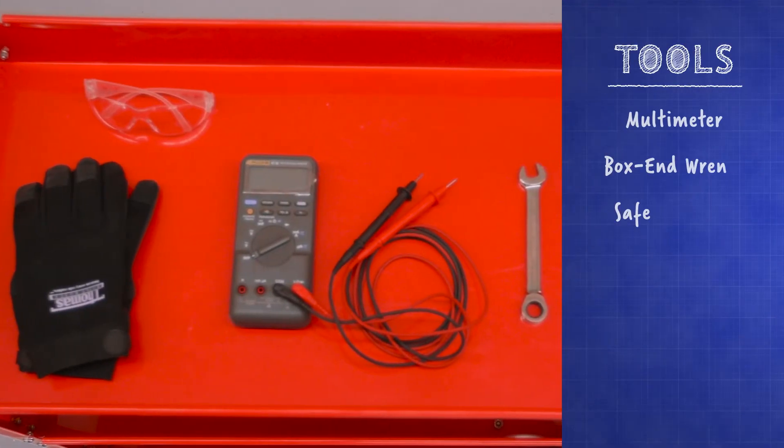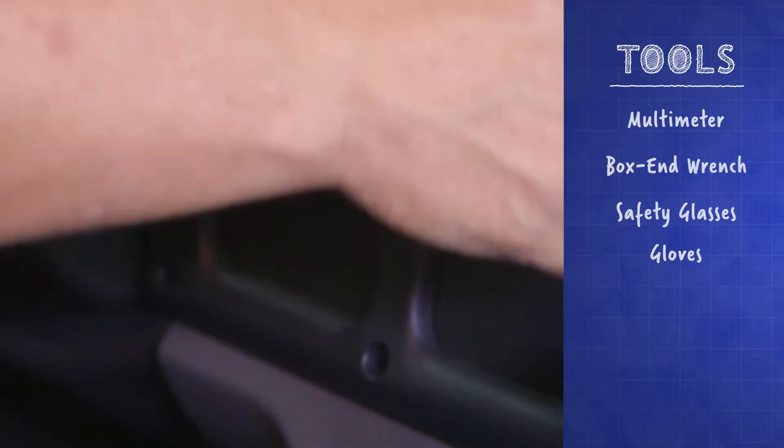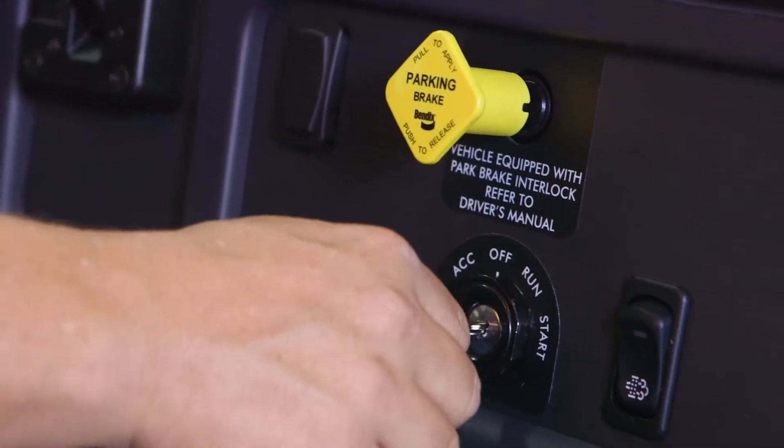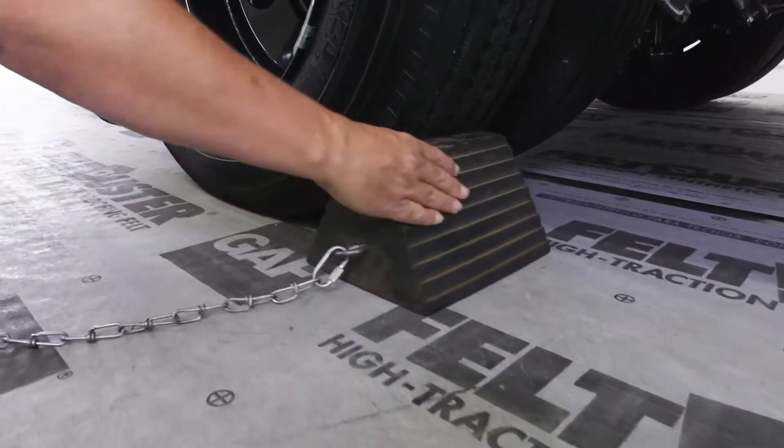To test the Datalink, you'll need the tools seen here. Prior to starting, apply the parking brake, turn the engine off, and chalk the tires.